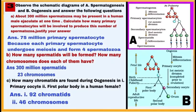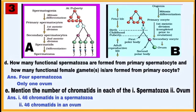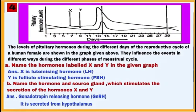The third case-based question is on spermatogenesis and oogenesis, with questions A, B, C, D, and E. The fourth case is based on levels of pituitary hormones during the different days of the reproductive cycle of a human female.